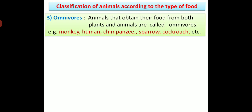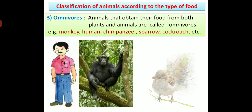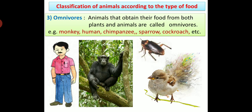Third: Omnivores - animals that obtain their food from both plants and animals are called omnivores. For example, monkey, human, chimpanzee, sparrow, cockroach, etc. are omnivores because they depend both on plants as well as animals for their food.